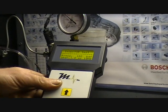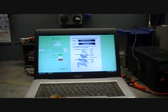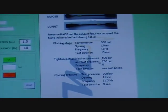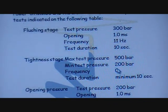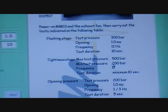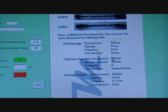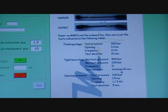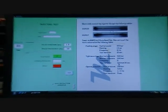Then you can also do a tightness test. You bring the pressure up to about 500 bar, minimum pressure of 200 bar. So you time how long it takes the pressure to drop from 500 to 200 bar and it should be a minimum of 10 seconds.